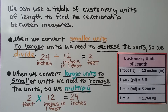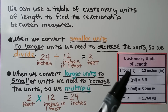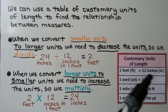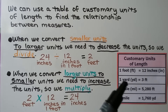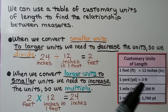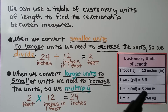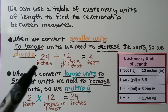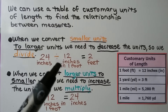We can use a table of customary units of length to find the relationship between measures. The table shows: one foot (FT) equals twelve inches (IN); one yard (YD) equals three feet; one mile (MI) equals 5,280 feet; and one mile equals 1,760 yards. When we convert smaller units to larger units, we decrease the units, so we divide — going from little tiny inches to larger feet.